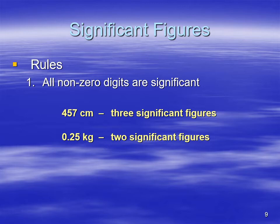Here are the rules of thumb for significant figures — there are six different rules. Rule number one: all non-zero digits are significant. Looking at two examples: 457 centimeters has three significant figures, and we are uncertain in that last one, the seven. The other value, 0.25 kilograms — you've got two numbers. The zero is not significant, but the 2 and 5 are, and we are uncertain in the number five.